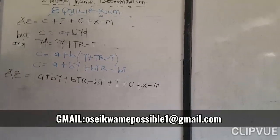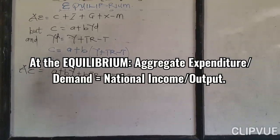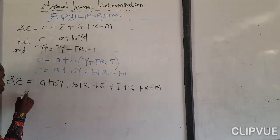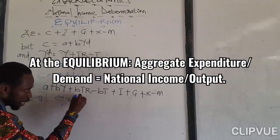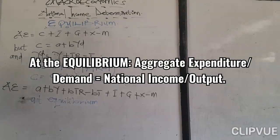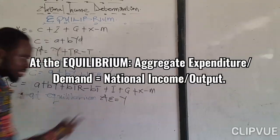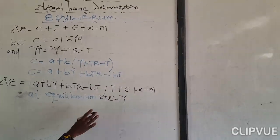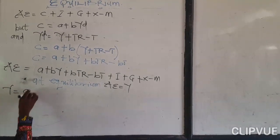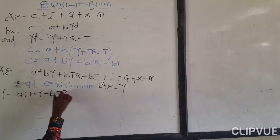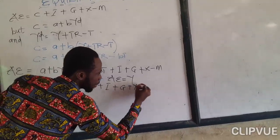From there, we know that at equilibrium, national income is equal to aggregate expenditure — output is equal to expenditure. So at equilibrium, aggregate expenditure equals Y. Therefore: Y equals A plus BY plus BTR minus BT plus I plus G plus X minus M.